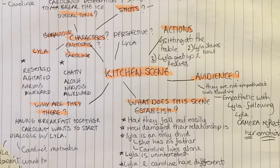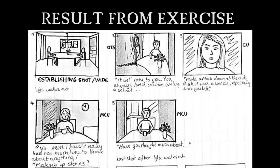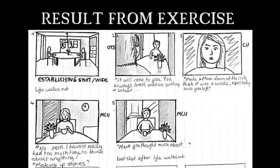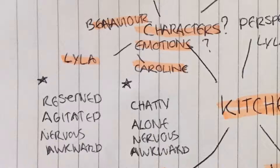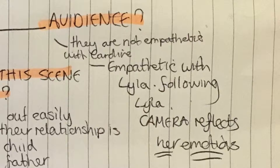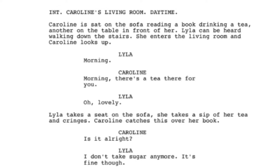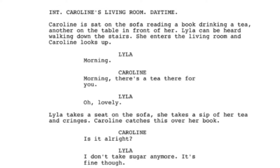I used the method of storyboarding from my research, breaking down the scene into its key elements which can then be helpful when thinking about what needs to be shown visually. I did this by asking myself a number of questions about the scene: What does the scene establish? What are the characters' emotions? What is the action of the scene? How does the audience feel? Whilst I didn't necessarily do this exact process for every scene, I did think of these questions when approaching each scene for storyboarding.